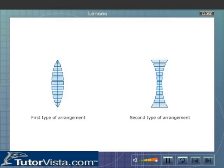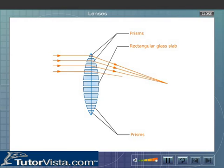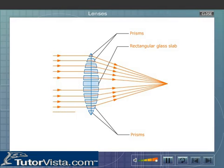Let us now try to understand the convergent and divergent action of a lens on a parallel beam of light. In the first type of arrangement, all the prisms in the upper half have their base downwards and the prisms in the lower half have their base upwards. Hence, any parallel beam of light incident on the upper half of the lens gets deviated downwards and the light incident on the lower half gets deviated upwards. The central part of the lens allows the light to pass without any deviation as it behaves like a glass slab. This type of lens concentrates a beam of light to a single point.